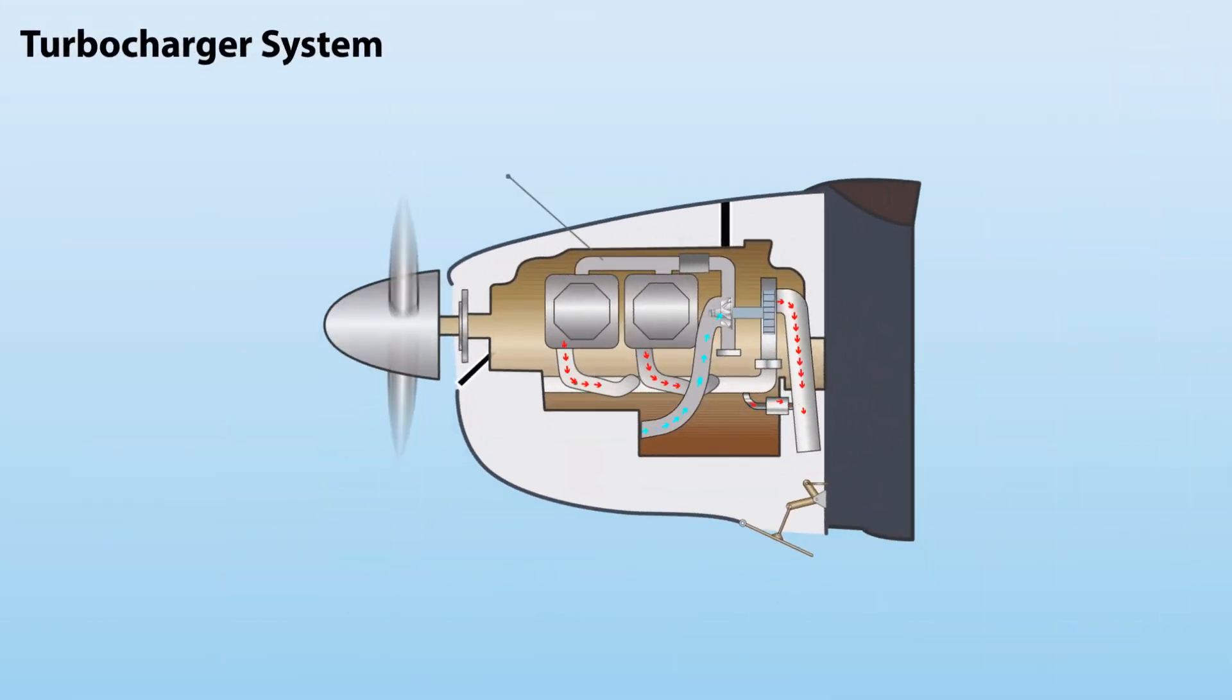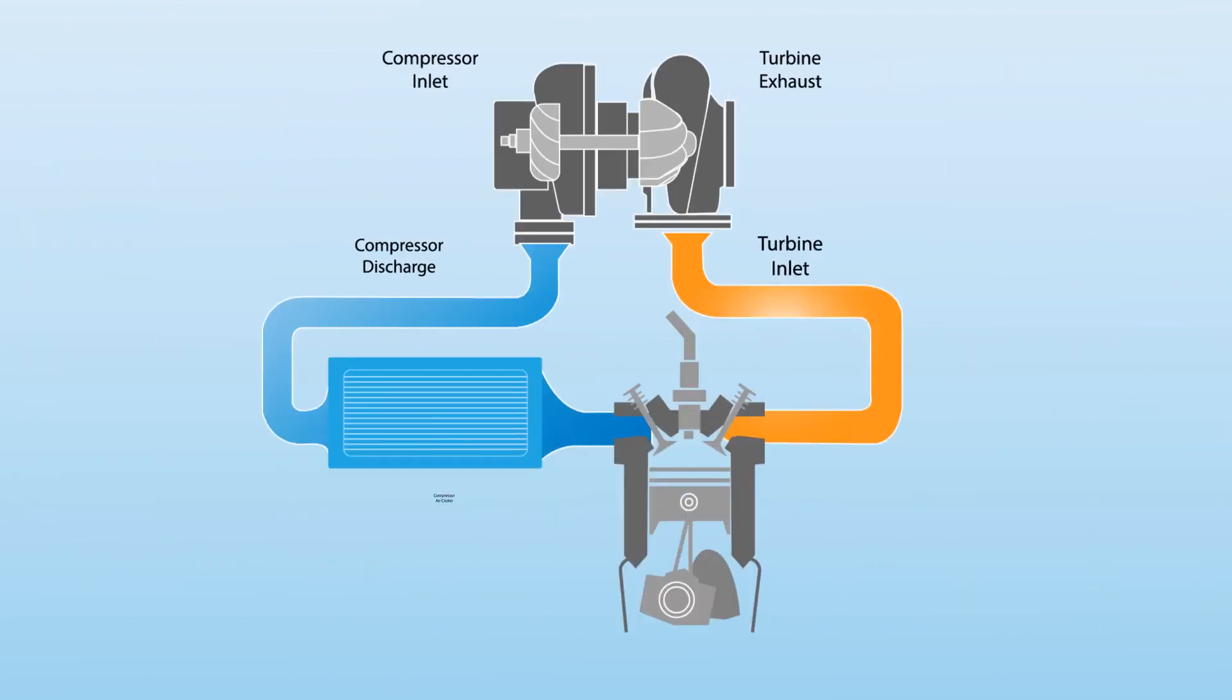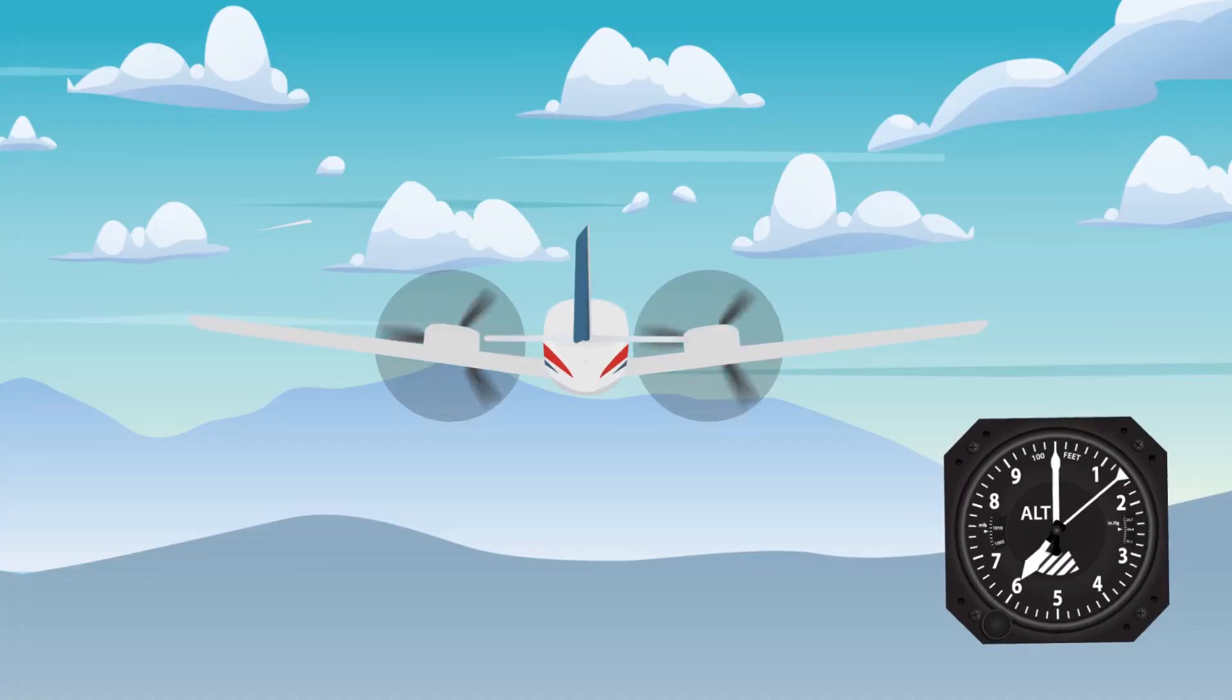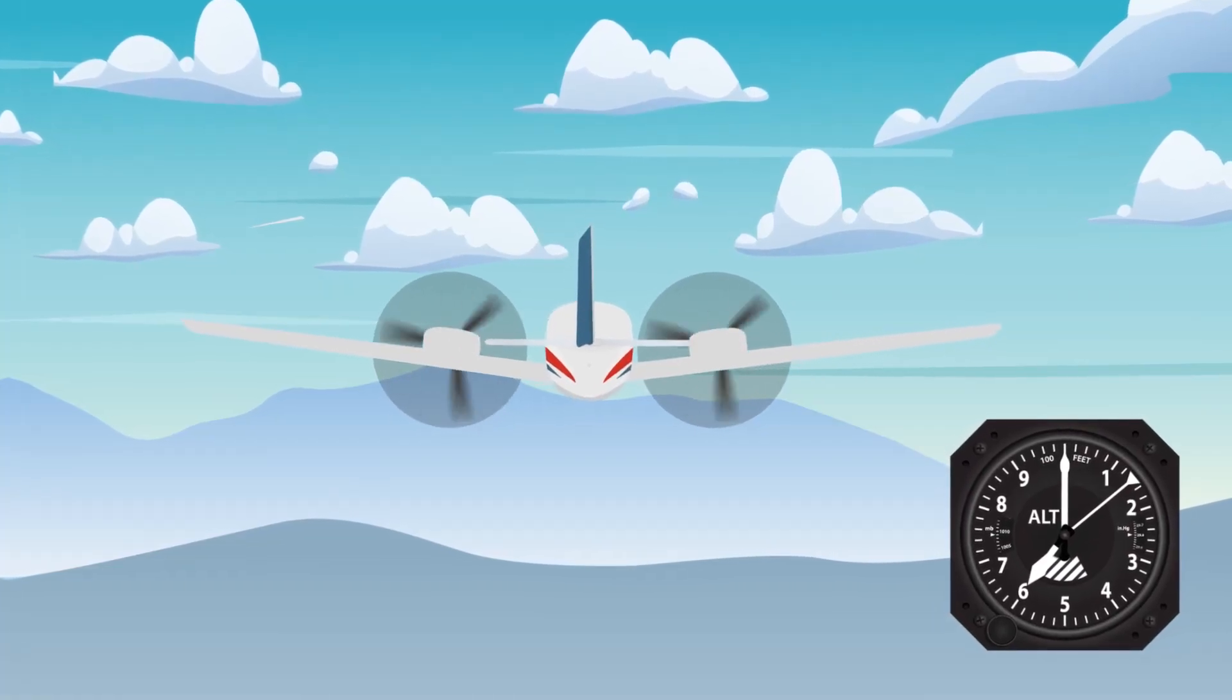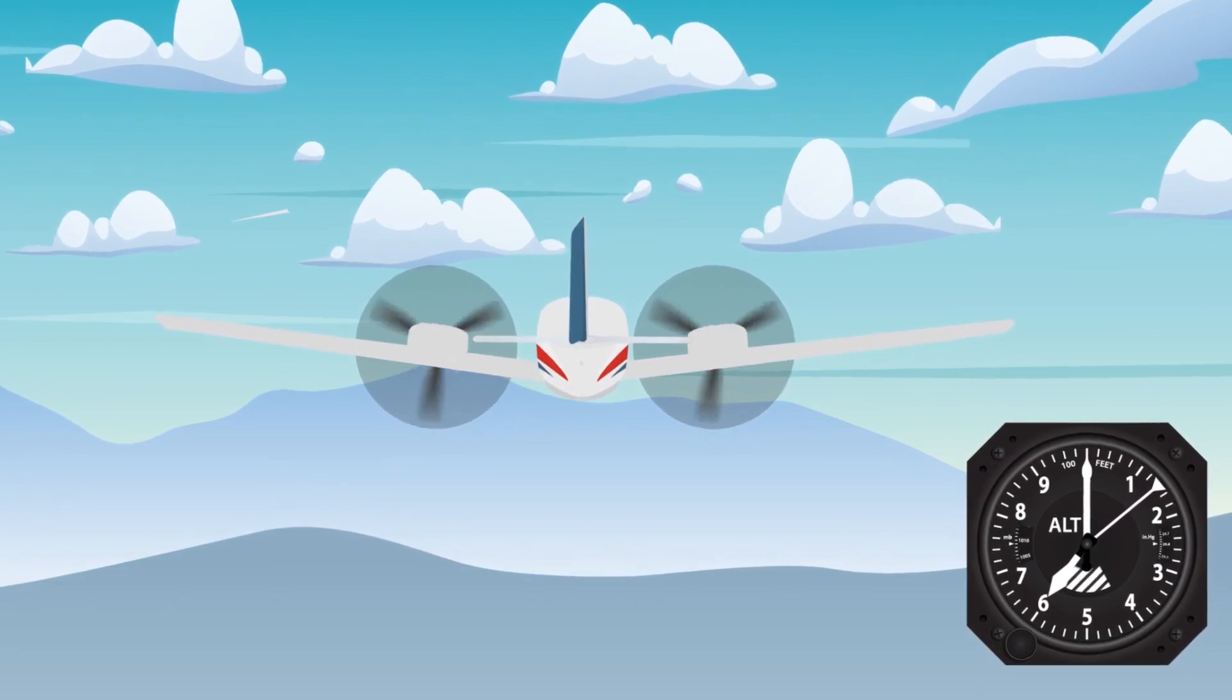To compensate for the performance loss in higher altitudes, the most efficient method of increasing horsepower is by using a turbocharger. A turbocharger system provides additional air for the engine's intake by harnessing energy from the engine's exhaust gases. This is especially important for higher altitudes where engine performance is lower due to lower atmospheric air pressure.